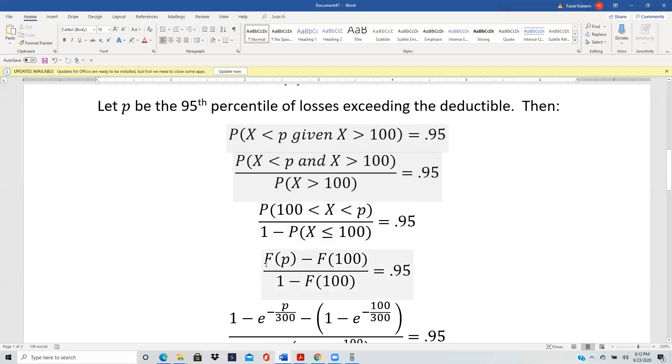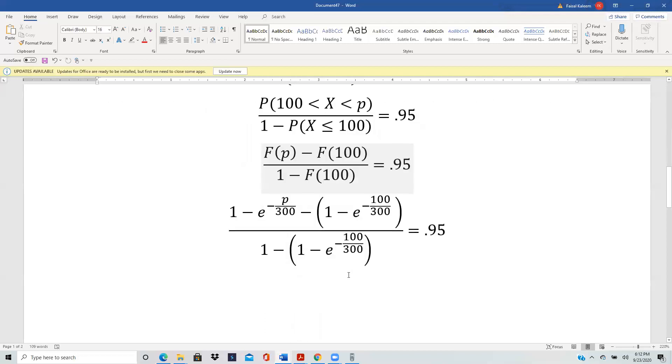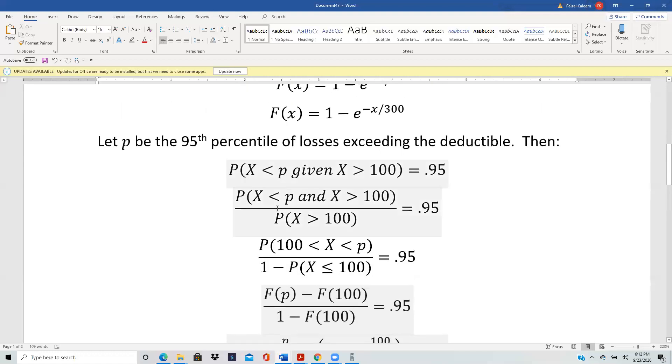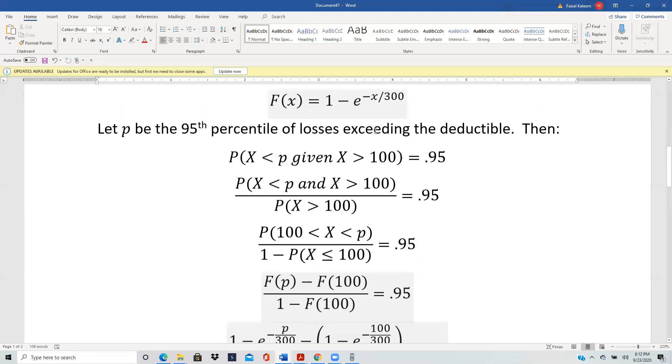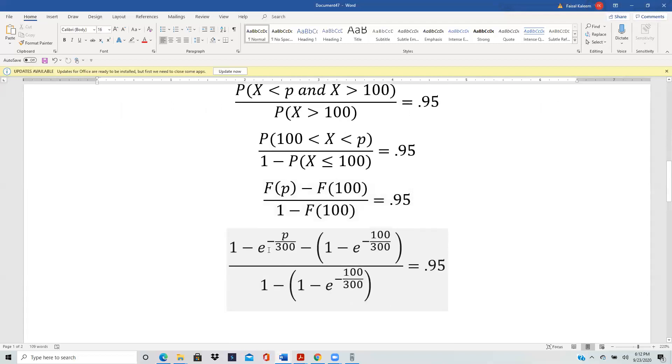And we know that for something like this, we can write in terms of CDF as F(P) minus F(100). And the X bigger than 100 is 1 minus X less than 100, so that's 1 minus F(100). And now we just substitute the appropriate values in F(X). F(X) is 1 minus e^(-X/300). So F(P) is 1 minus e^(-P/300). This would be 1 minus e^(-100/300).